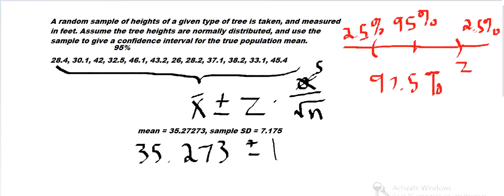And so 1.96 times, then we put in the sample standard deviation. 7.175 over square root of however many are in the sample. That's 1, 2, 3, 4, 5, 6, 7, 8, 9, 10, 11, 12 in the sample. And then we calculate that.